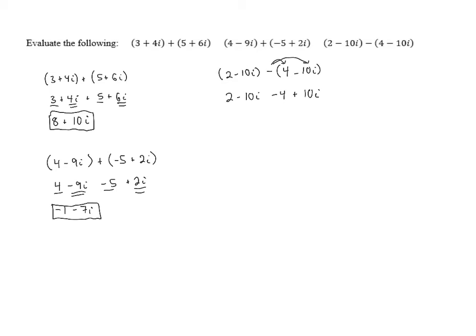Again, we combine the real and imaginary parts. The real parts, 2 minus 4, give us negative 2. And then the imaginary parts, negative 10i plus 10i, give us 0i. We can write negative 2 plus 0i. We can also leave it as negative 2. Both of these are perfectly acceptable.